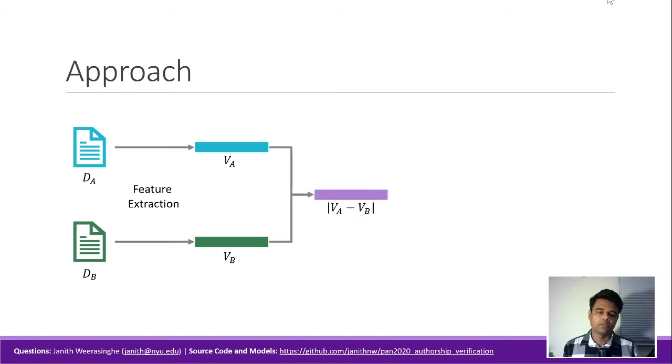Then, we took the absolute difference between these two feature vectors and fed it to our machine learning classifier. The reasoning behind this approach of taking the vector difference is that we hope the machine learning model would be able to learn which stylometric features should have similar values between them if the two documents were written by the same author.